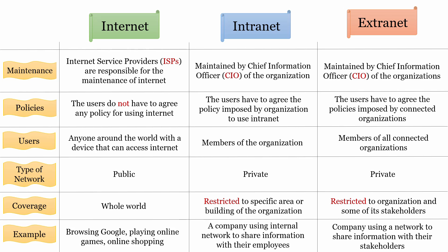Examples of internet include browsing Google, playing online games, and online shopping. An example of intranet is a company using an internal network to share information with their employees. An example of extranet is a company using a network to share information with their stakeholders.